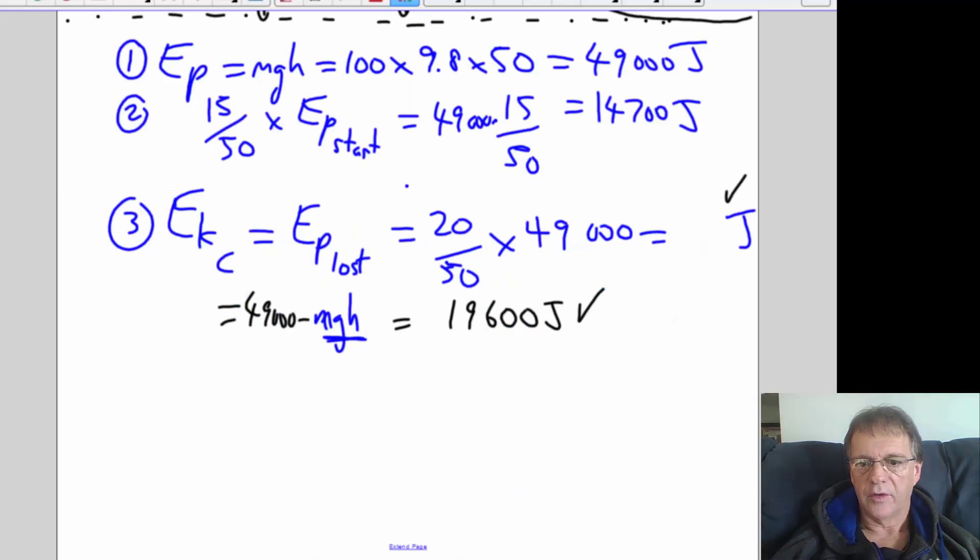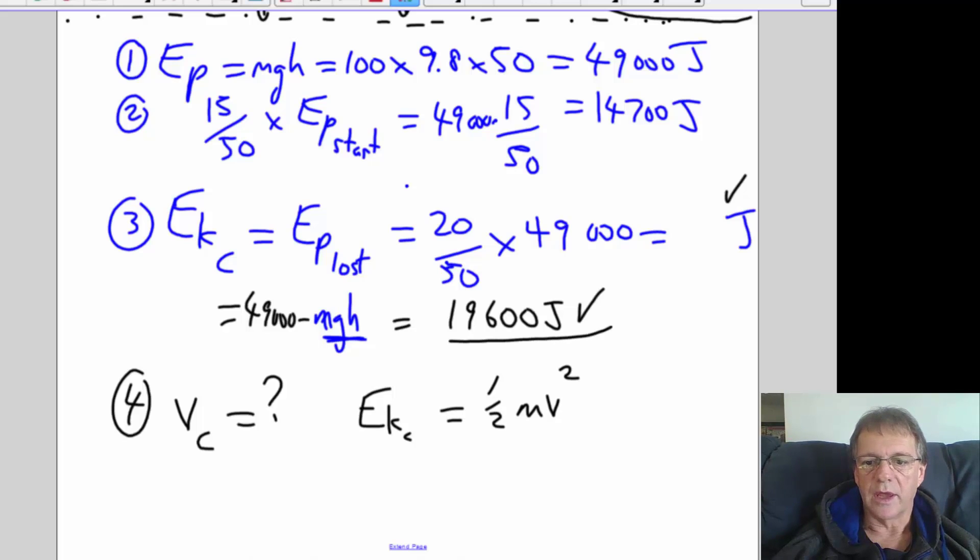So that'll be 19,600 joules. Now if you want the velocity at C, you can just do it in terms of energy now. You don't have to use the equation of motion because kinetic energy has a formula which includes the velocity. So if you put in the kinetic energy of 19,600 joules and equate that to ½mv², and you rearrange it, you can work out the velocity that way.